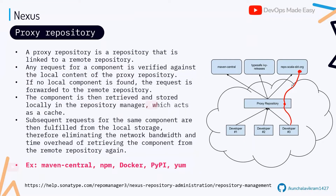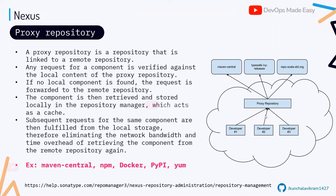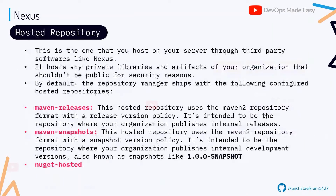Once these dependencies are fetched, they are cached locally, so subsequent requests from other developers can be served directly from the proxy repository — similar to how Maven Central or Docker Hub work.